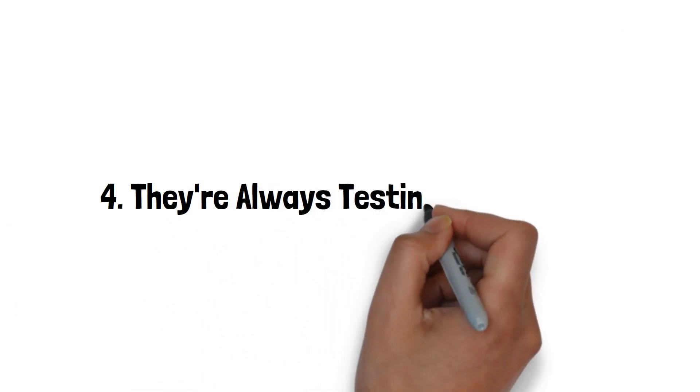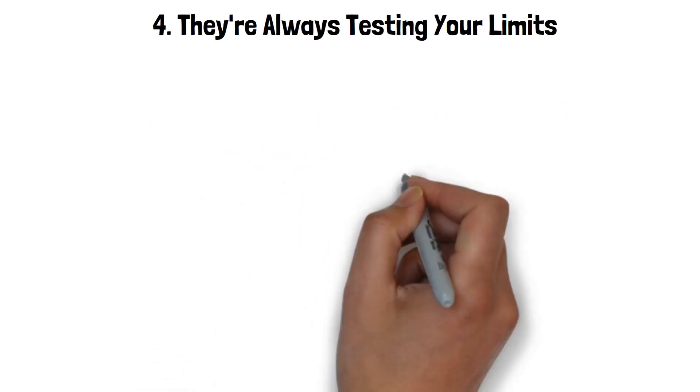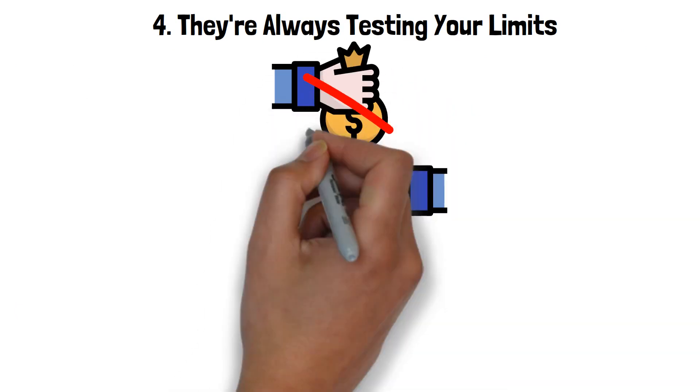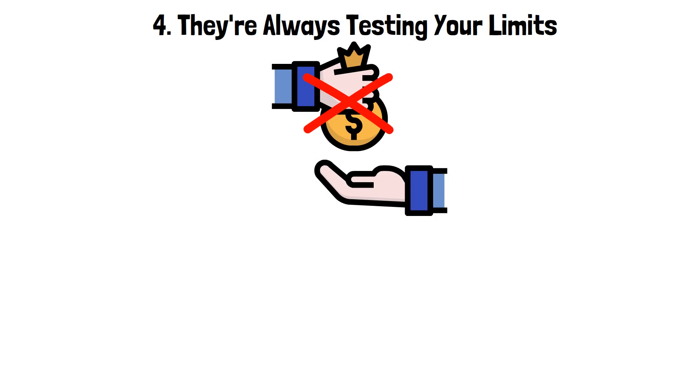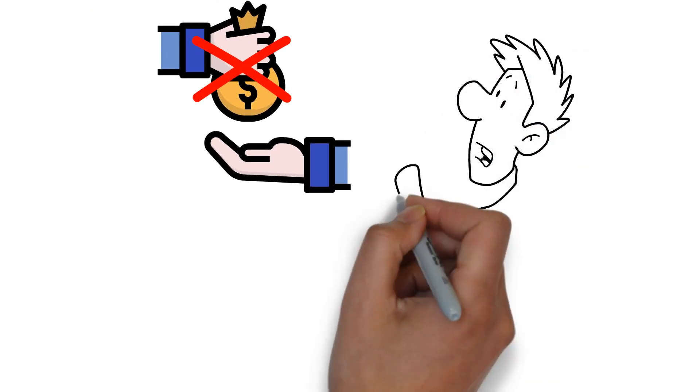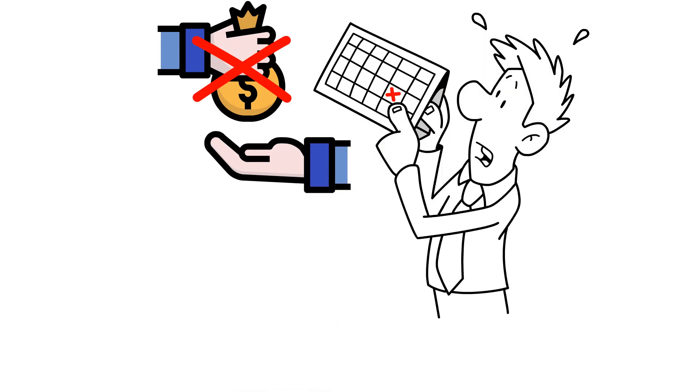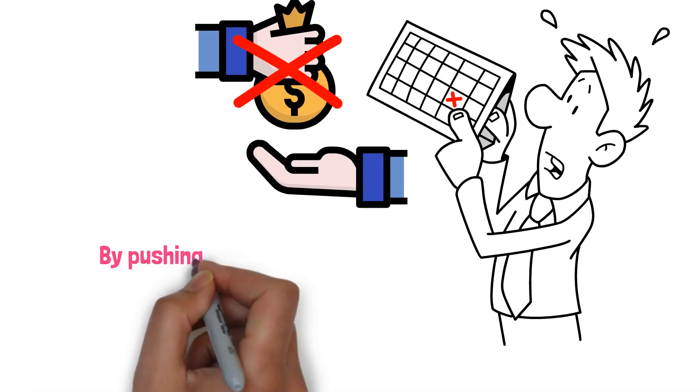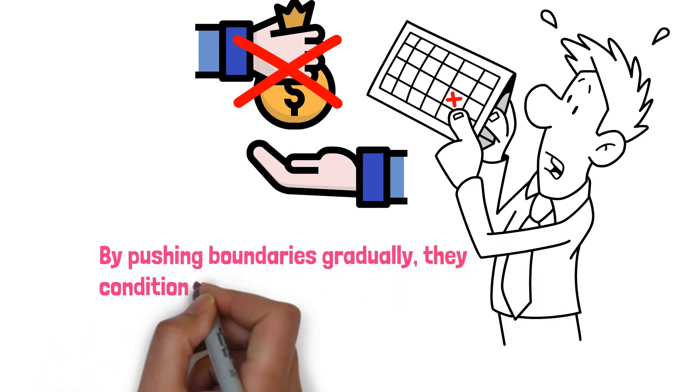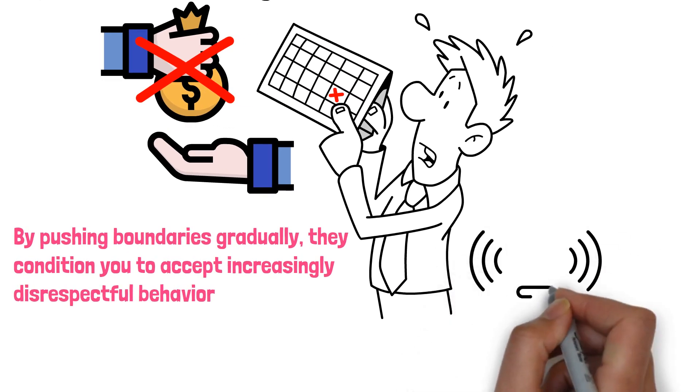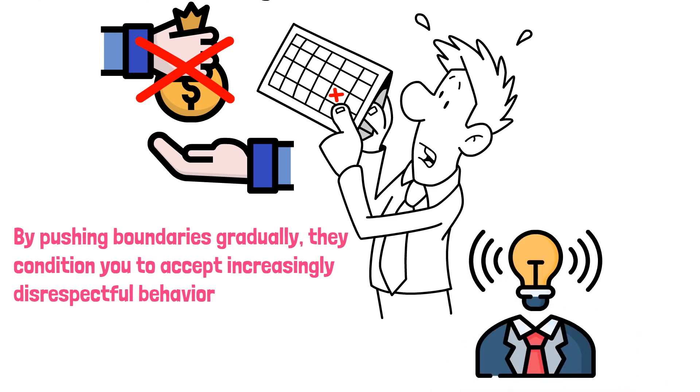4. They're always testing your limits. It starts small. Maybe they borrow something and don't return it. Then, they might cancel plans at the last minute. Each action seems inconsequential alone, but together, they form a pattern. The manipulator is testing how much you'll tolerate. By pushing boundaries gradually, they condition you to accept increasingly disrespectful behavior. It's easy not to notice the danger until it's too late, so awareness is key. If someone constantly pushes your limits, it's time to re-evaluate the relationship.